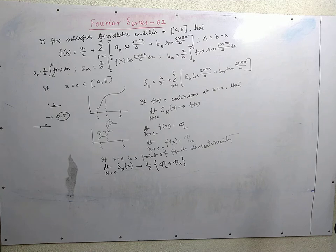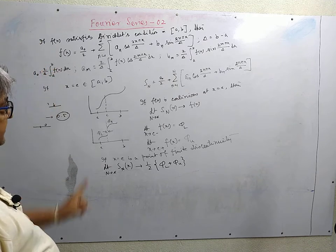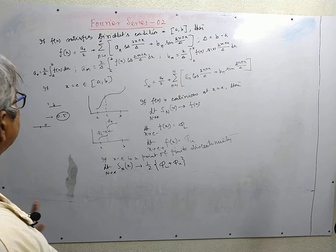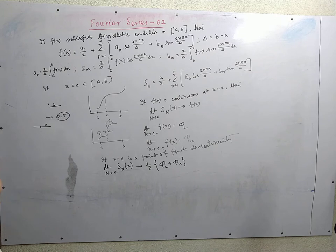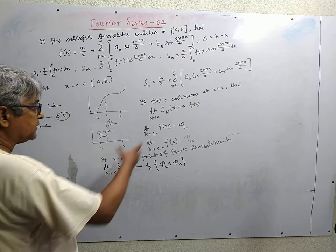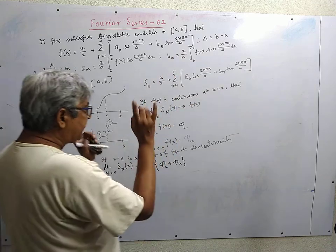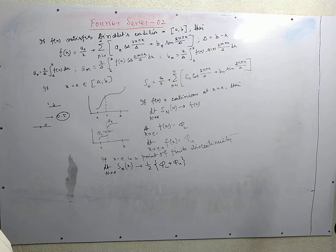So this completes the definition — the statement of Fourier series. The statement comprises three parts: the statement itself, specification of the constants, and what the value estimated by the Fourier expansion should be at a point within a to b. If f(x) is continuous, the estimated value approaches the functional value; if the function is discontinuous, the estimated value approaches the average value at the point of discontinuity. This completes the statement of Fourier series.